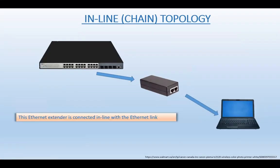Let's take a look at another real-life example here — inline or chain topology. As I go along, I'll explain what these pieces of equipment are. This Ethernet extender — I think we also saw that in our in-person class. The Ethernet link — we haven't talked about this yet, but I will let you in on some secret. The Ethernet cable, as far as copper twisted pair, can be no longer than 300 feet or 100 meters.